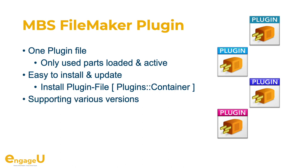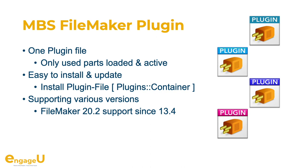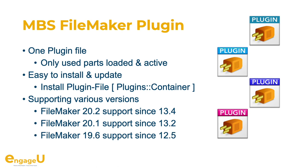We support various versions of FileMaker. The current version supports FileMaker 22, and of course we also support older versions. On Windows it goes down to version 7 and on Mac it goes down to version 8.5. You may need older plugins for macOS because the current release requires macOS 10.13, and on Windows we have a special version for Windows 7, so you can use our plugin with all FileMaker versions you may find.